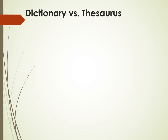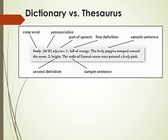Let us now compare what we can find in a dictionary and a thesaurus. In a dictionary, we can find the entry word, its pronunciation, the part of speech that the word belongs to, and the different definitions. In some dictionaries, there are sample sentences where we can find how the word is used. Here is another definition, here is another definition, here is another definition, and another sample sentence.